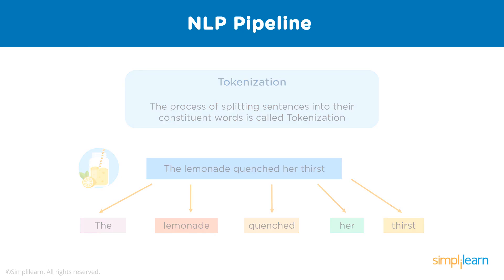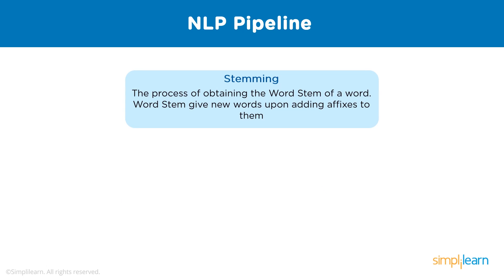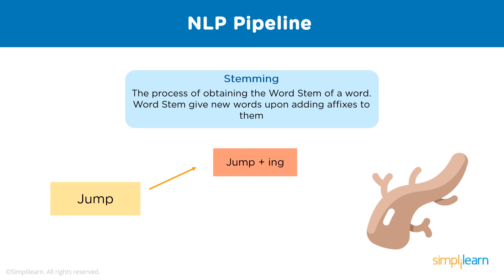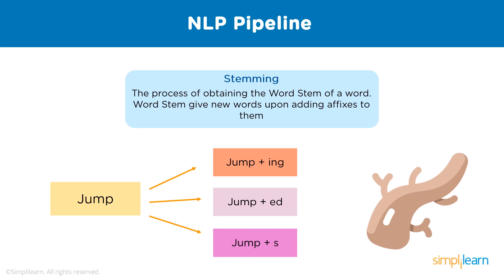After tokenization, we perform stemming. Stemming is the process of obtaining the word stems, also known as the base form of a word. We can create new words by attaching affixes in a process known as inflection. Stemming recognizes the word stems by removing affixes such as -ing, -s, -ed, etc. For example, 'jump' is the word stem of 'jumping,' 'jumped,' and 'jumps' — removing those affixes gives us the basic word stem: 'jump.'